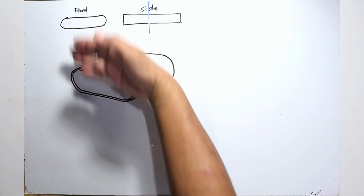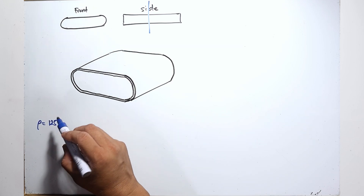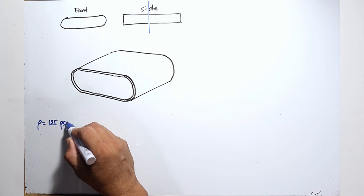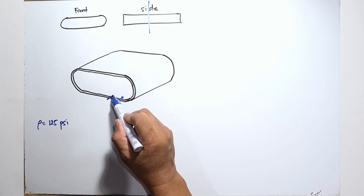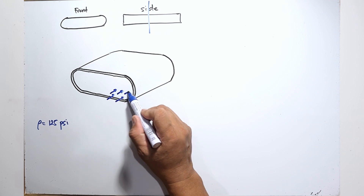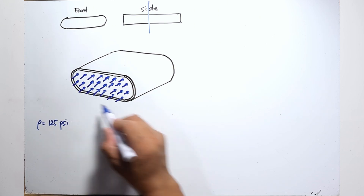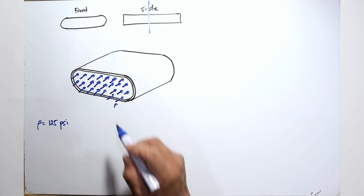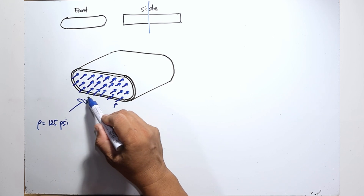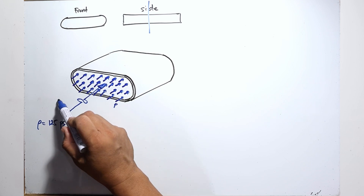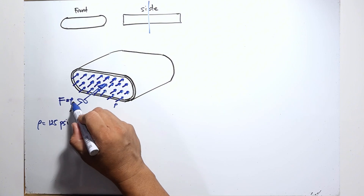Basically, in a thin-walled pressure vessel, the bursting force caused by the pressure is going to be resisted by the tension in the walls of the vessel. This section is drawn in isometric. The pressure of 125 PSI is acting on this area. The total resultant is the force F, that is pressure times the area — let's call it area 1.